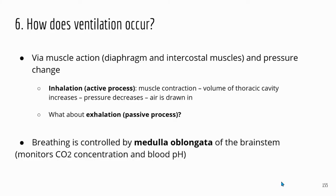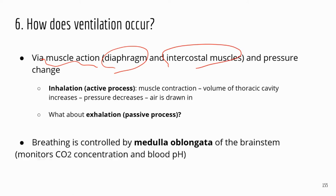I want to talk about how ventilation occurs. Ventilation is done by muscle action — this involves the diaphragm and intercostal muscles. When those muscles contract and relax, it's going to change the volume of the thoracic cavity, which in turn affects the pressure.